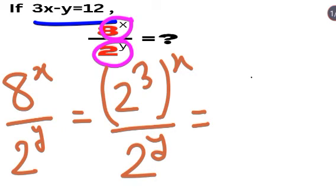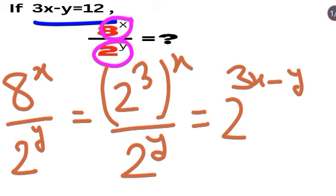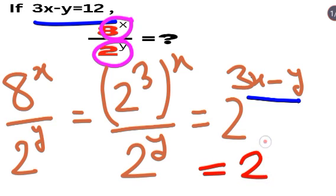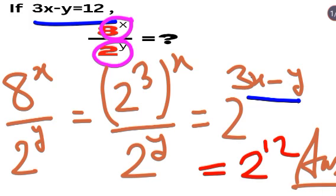By the property of indices, we can write this as 2 raised to the power 3x minus y. Since 3x minus y is equal to 12, we substitute this value and get the answer as 2 raised to the power 12.